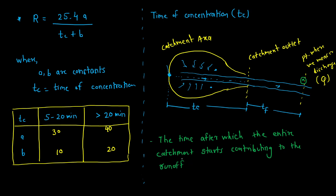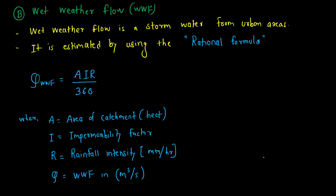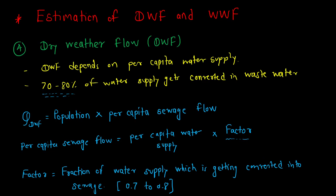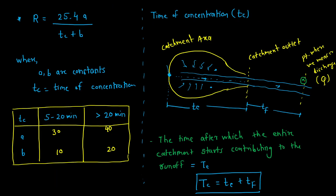Time of concentration Tc = time of entry + time of flow. Adding these two gives the value of time of concentration. This information is enough for the estimation of wet weather flow, and with this we are able to calculate both dry weather flow and wet weather flow for the design of combined sewers.